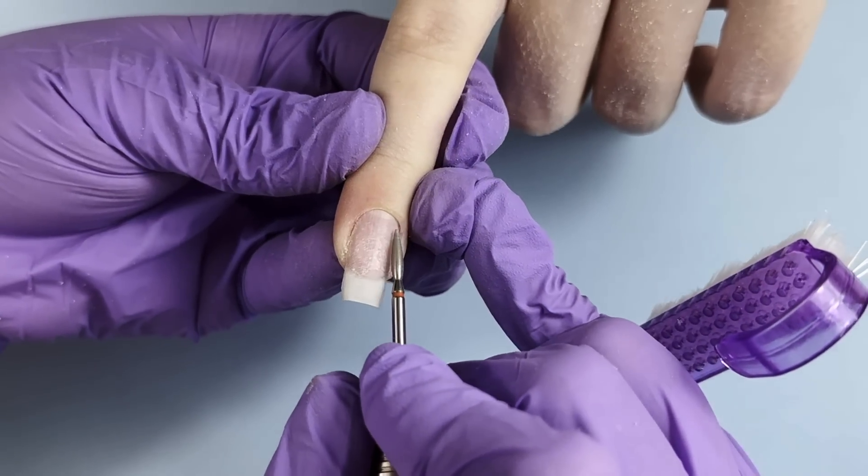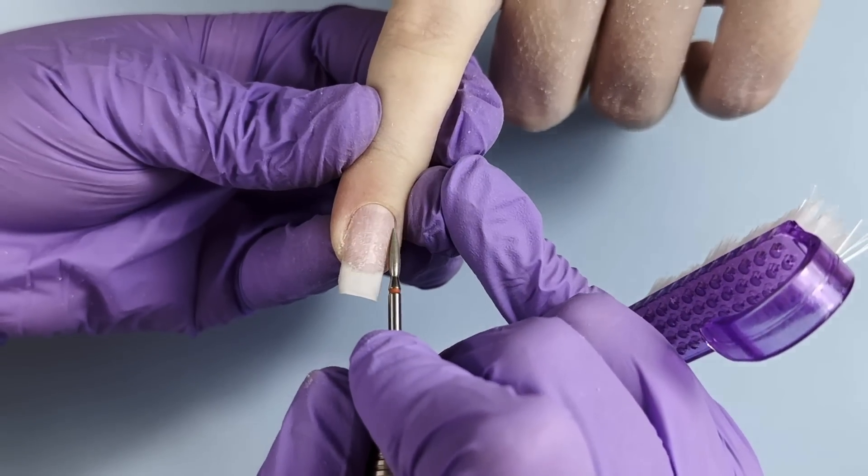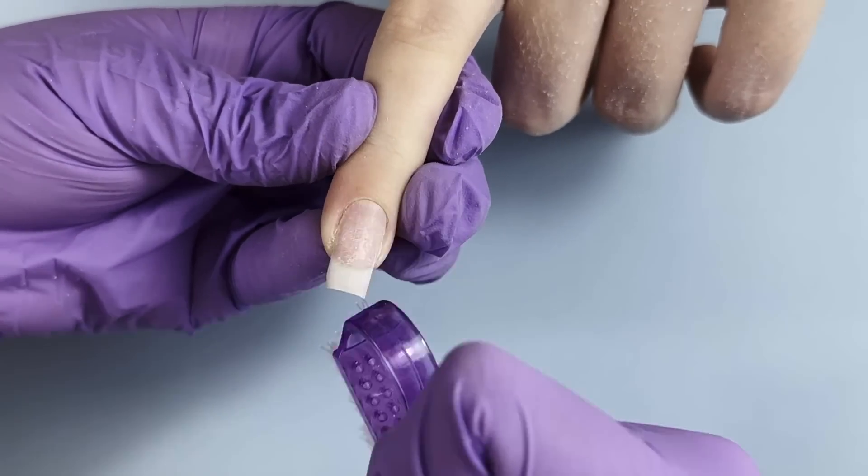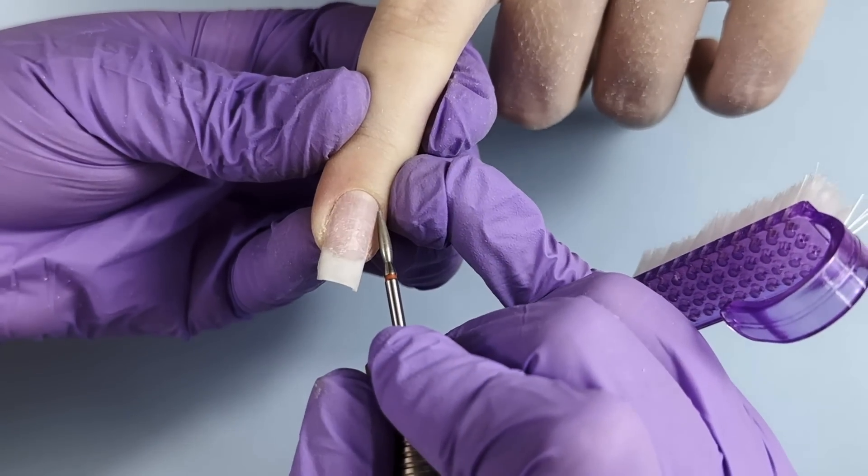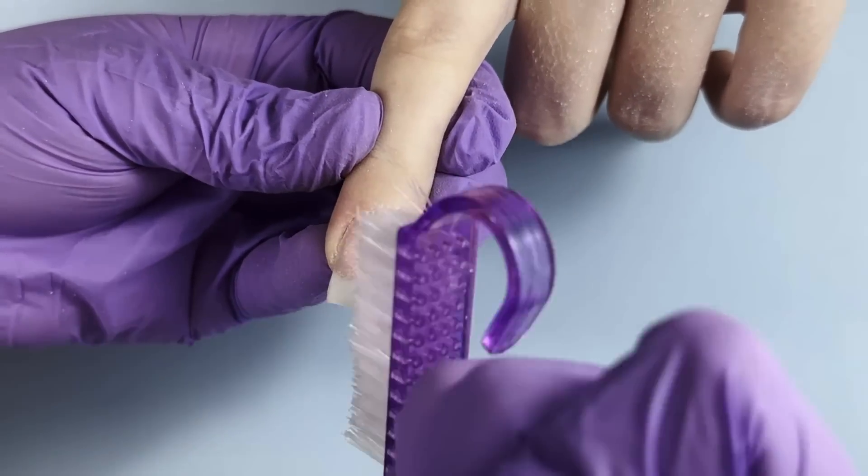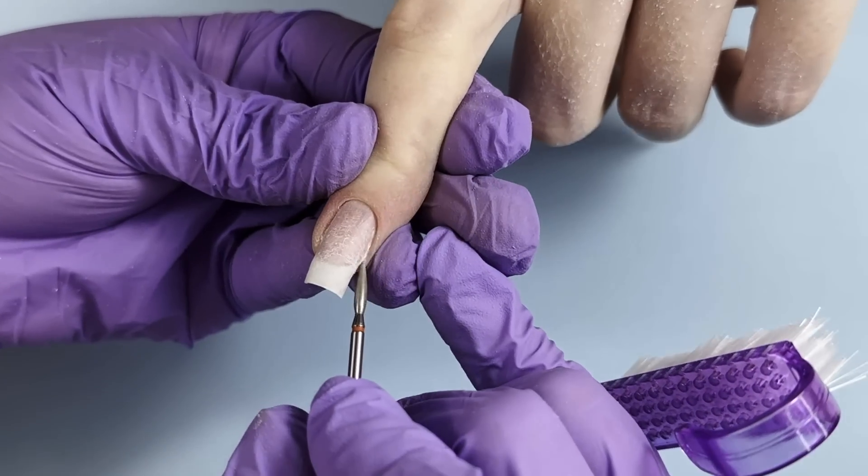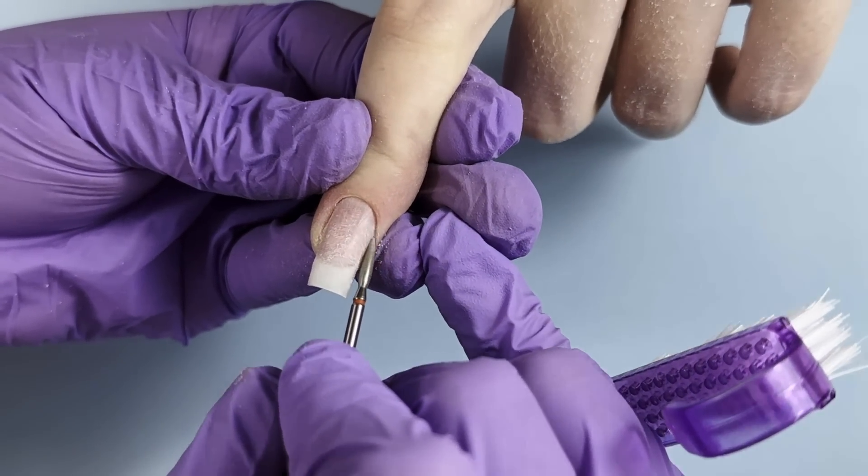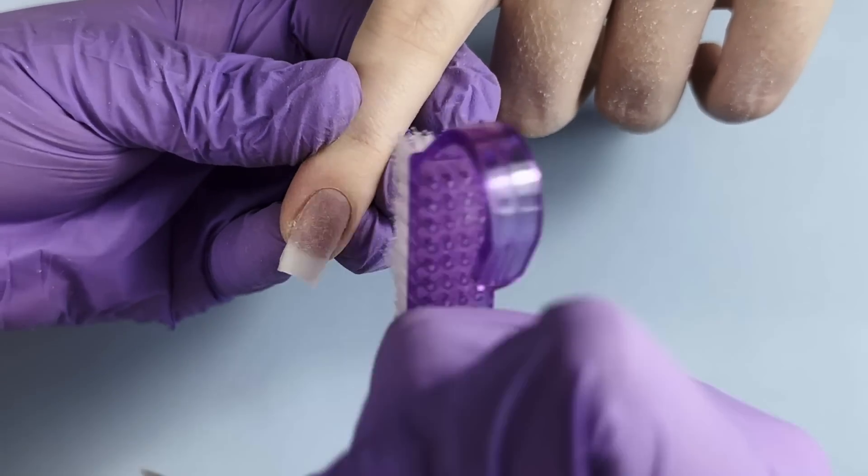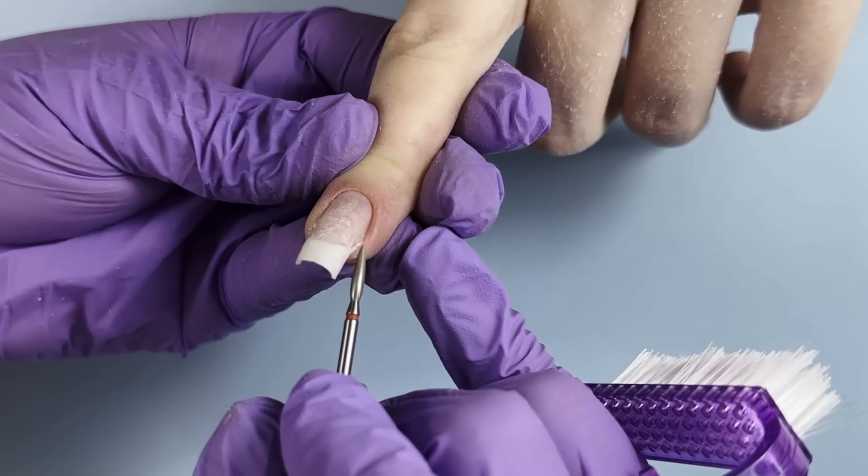After filing and shaping we need to do manicure, and this is also part of the prep. I'm using flame-shaped diamond bead with red abrasive mark. The speed is around 16,000 rotations per minute. Today we have a client with very simple cuticles. As you can see there's not that much to work on, and it usually doesn't take me longer than about 10 minutes to do e-file manicure on 10 nails.